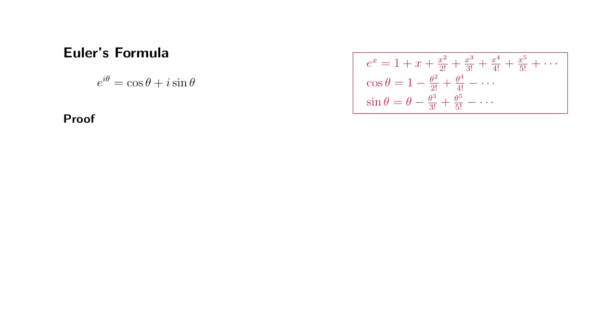All right, let's look at Euler's formula. I'm pretty sure you have seen this formula before. e to the i theta is equal to cosine of theta plus i sine of theta.